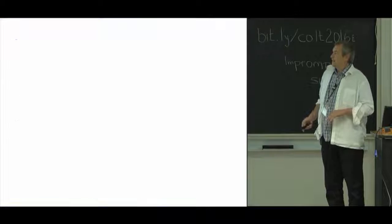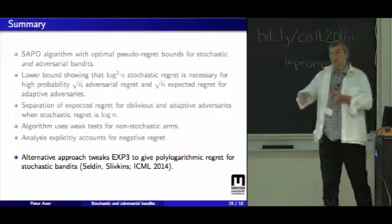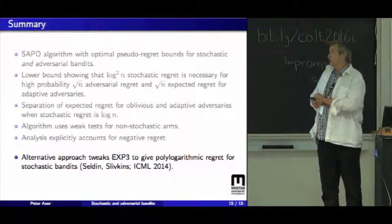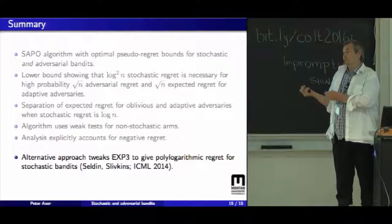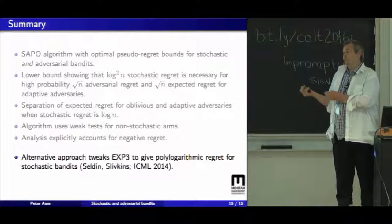The analysis explicitly accounts for negative regret. And where our algorithm starts with an algorithm for stochastic bandits and does additional checks to detect that the bandits are actually adversarial, there's an alternative approach to that: to start with an algorithm for adversarial bandits, like EXP3, a variant of that, and tweak the algorithm such that it also gives polylogarithmic regret for stochastic bandits. And this is work by Seldin and Slivkins. That's it. Thank you.